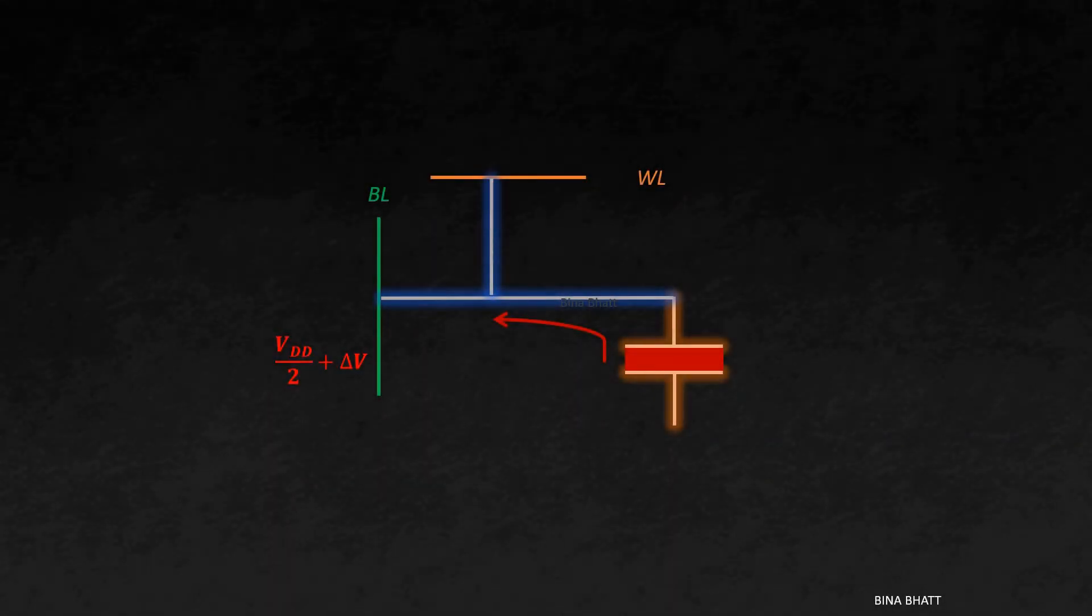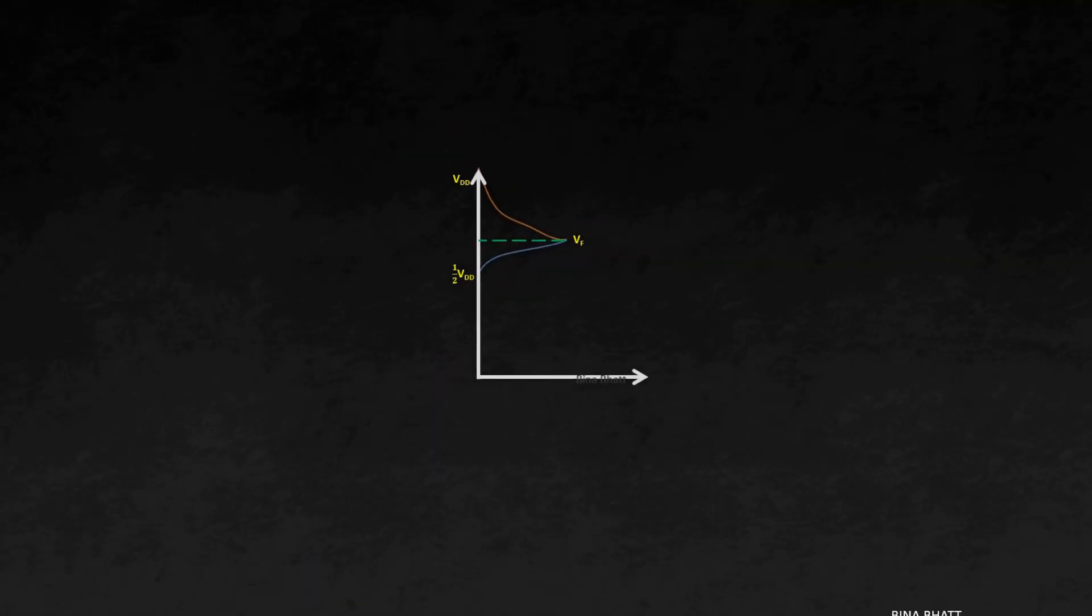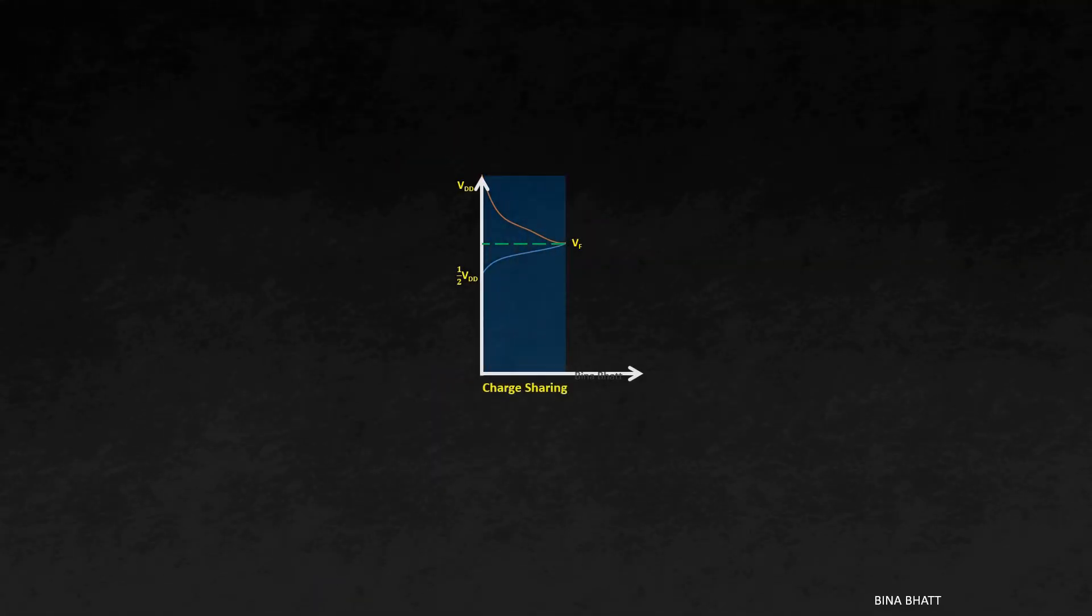Now, it is the job of the differential sense amplifier to detect this slight change in voltage and amplify it. Thus, after the charge sharing process, the sense amplifier is enabled, as seen in the graph, to detect the change in voltage. And as covered before, slight increase in voltage gets amplified to 1 and a slight decrease gets amplified to 0.